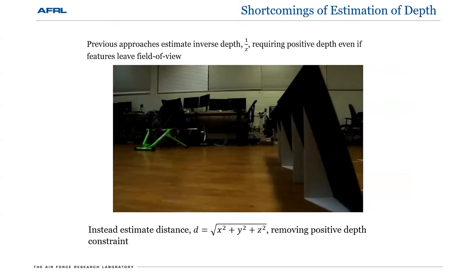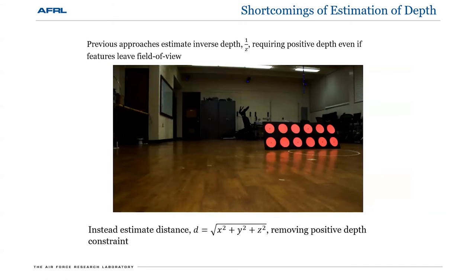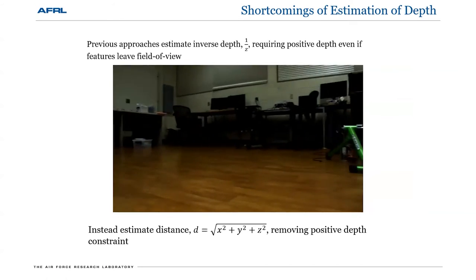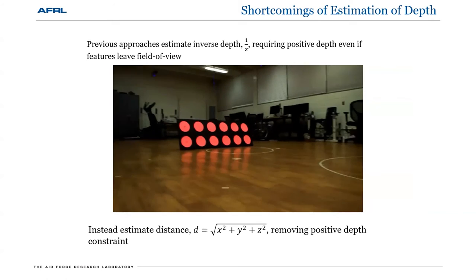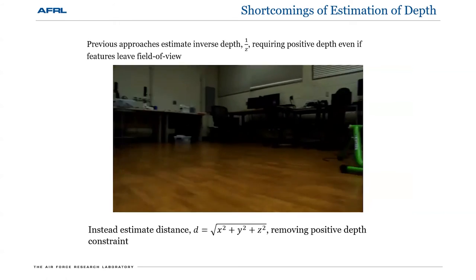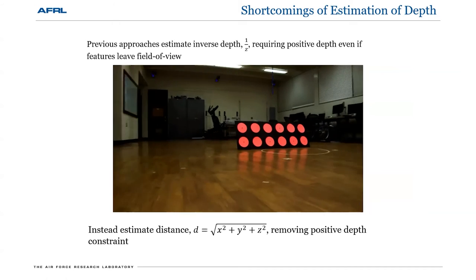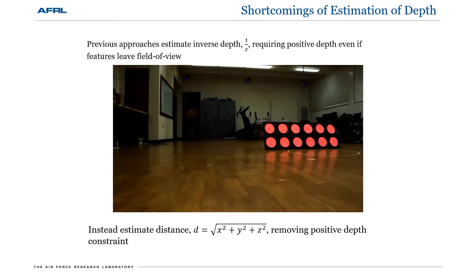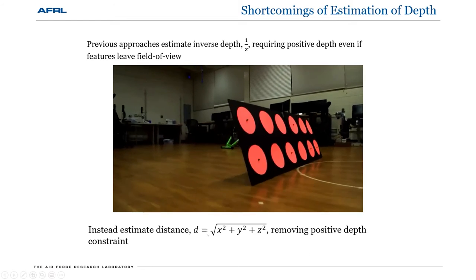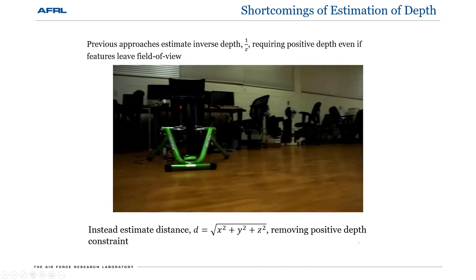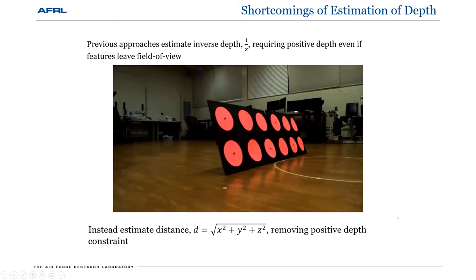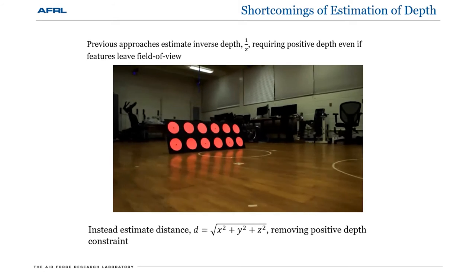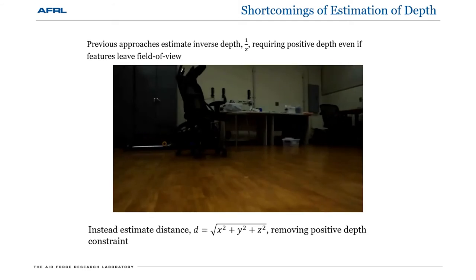The main reason I do that is that we're interested in target tracking applications and navigation over large distances where features may leave the field of view. With inverse depth parameterization, you go through a singularity because the depth passes through zero when it goes past the image plane. But if you use a unit vector approach and estimate distances instead, you avoid that problem. You're able to continue your estimate, and the only singularity is when you make contact with a feature.